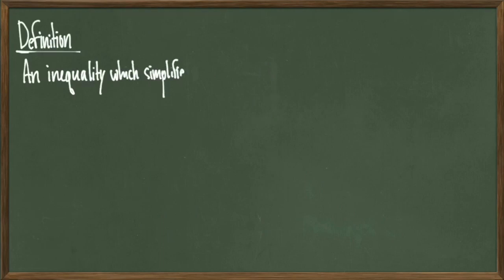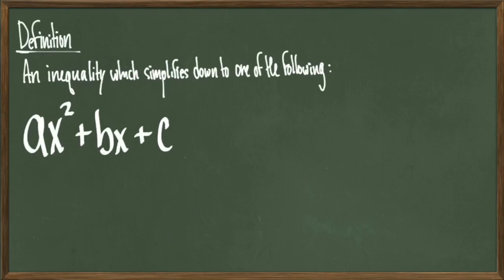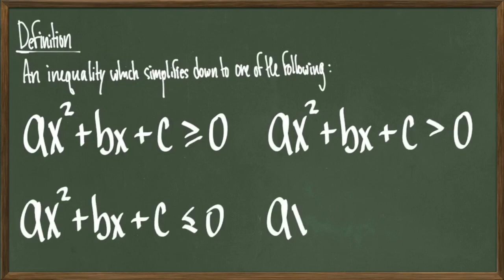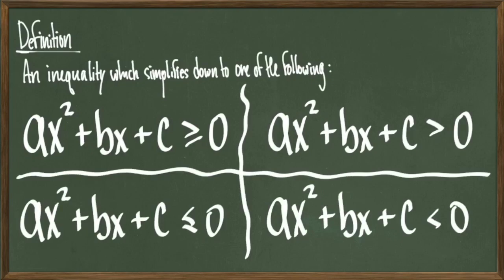A quadratic inequality is an inequality that involves a quadratic, or a polynomial of degree 2. It's going to look like one of these four forms. Sometimes you do have to manipulate what you're given so that it has this form — with the quadratic on the left and zero on the right — but that manipulation is pretty straightforward.